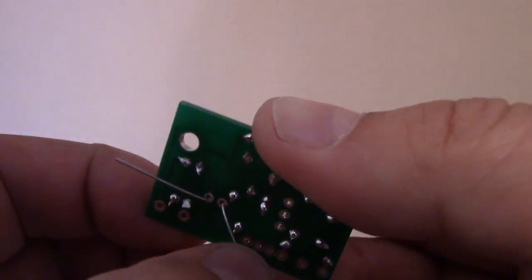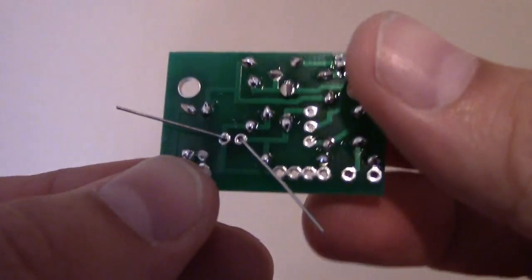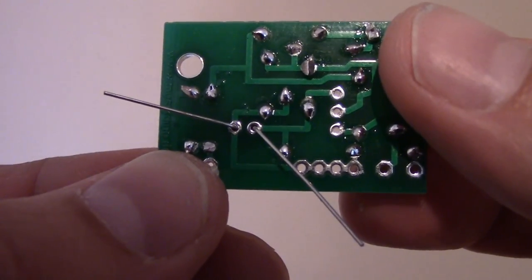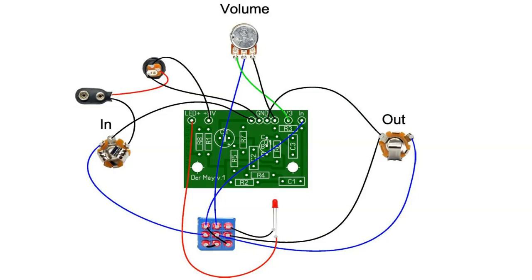Next, solder the capacitor in place. So now that we have the resistors and capacitors installed, let us refer back to the wiring diagram to see what is remaining.